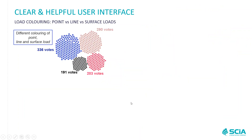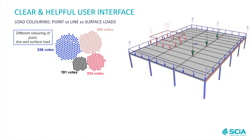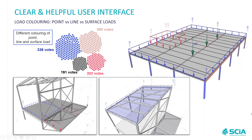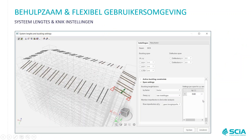Different coloring of point, line, and surface loads was number one in our survey. It's now possible in CI Engineer to show loads in different colors — point loads, surface loads, and line loads each shown in distinct colors. The next big improvement, number two in the survey, is the improvement of system lengths and buckling settings — we have brand new buckling settings with improved graphical input.